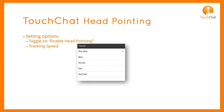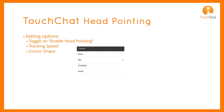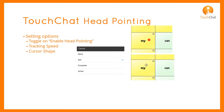Tracking speed offers five options from very slow to very fast — how fast across the screen will the tracking travel? The cursor shape offers four options: no cursor, in which you would likely just use the highlight button feature. Shapes include a dot, crosshair, and an arrow.